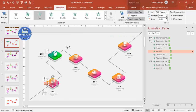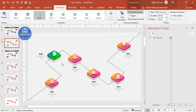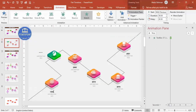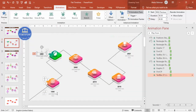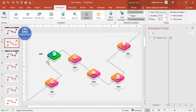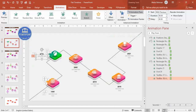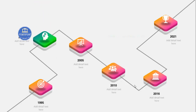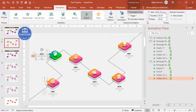Continue selecting each element and applying the animation using Animation Painter. When you play it, the first line appears, then when you click the first year appears, then the second year, and so on. Using Animation Painter you can complete the animation for the rest of the options.